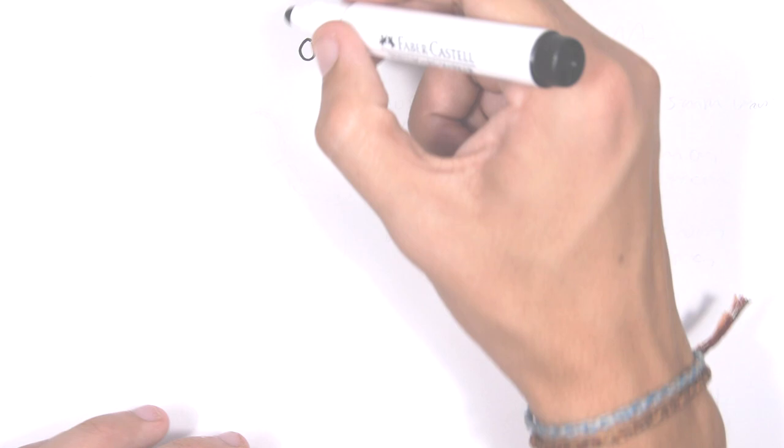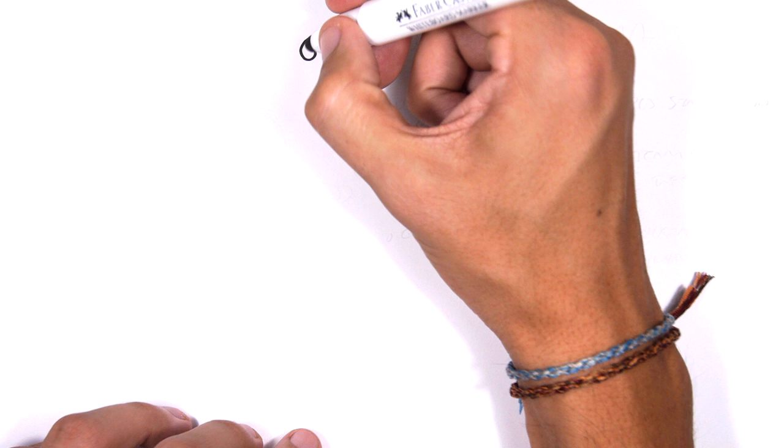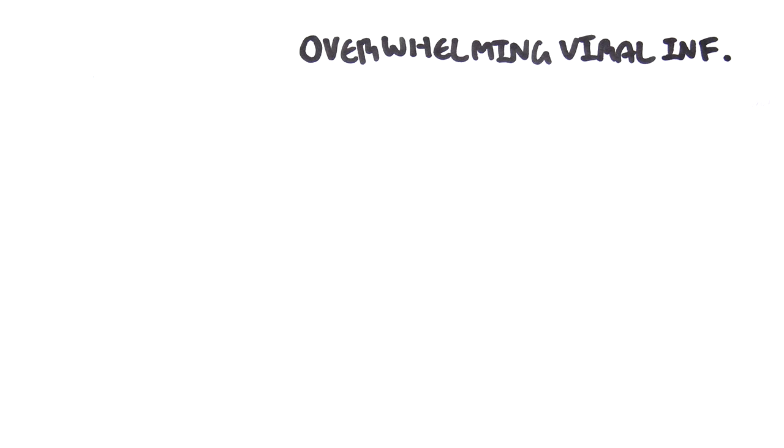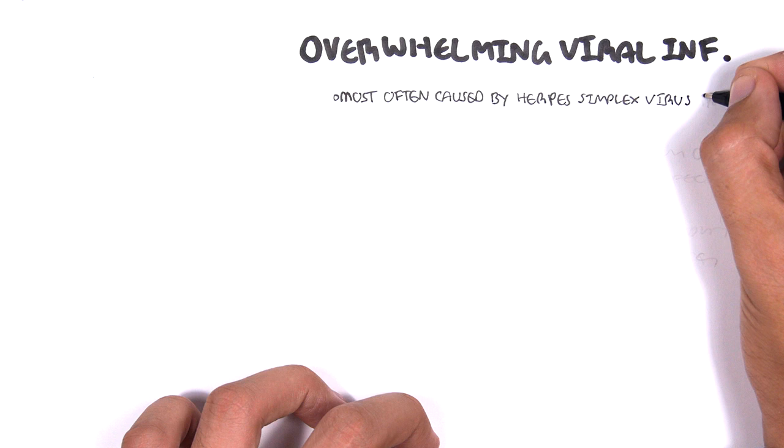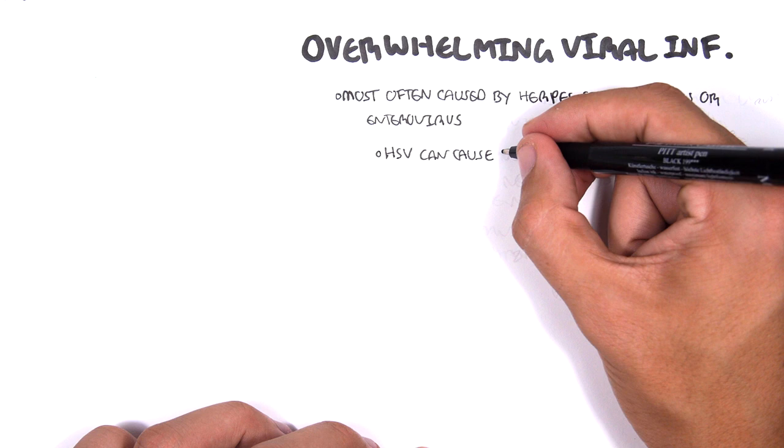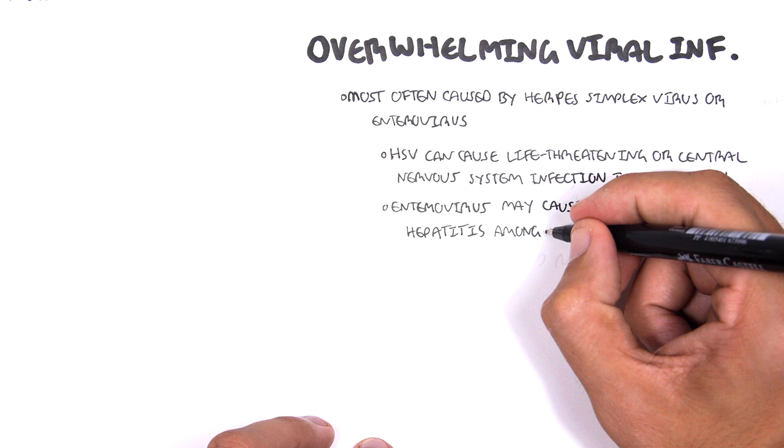The next and final infection is overwhelming viral infection. As the name suggests, it's an overwhelming response to a viral infection. It's most often caused by herpes simplex virus or enterovirus. Herpes simplex virus can cause life-threatening or central nervous system infection in the newborn. Enterovirus may cause myocarditis or hepatitis among neonates.